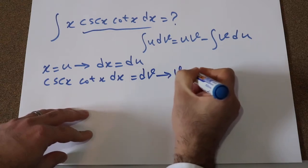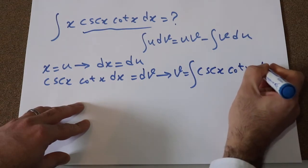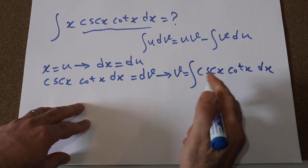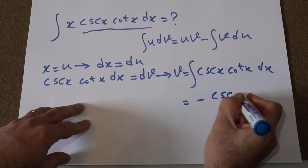Therefore, v will be equal to integral of cosecant x cotangent x dx. So from the table of integrals, you know that is equal to minus cosecant x.